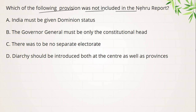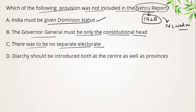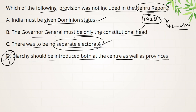Next — which of the following provision was not included in the Nehru Report? Dhyan rakhiye, Nehru Report aayi hai 1928 mein, prepared by a committee headed by Motilal Nehru. Options: India must be given dominion status; the Governor General must be the only constitutional head; there was to be no separate electorate; and diarchy should be introduced at both center and provincial level. Diarchy ka concept Nehru Report mein nahi tha — baaki teeno concepts Nehru Report mein the.